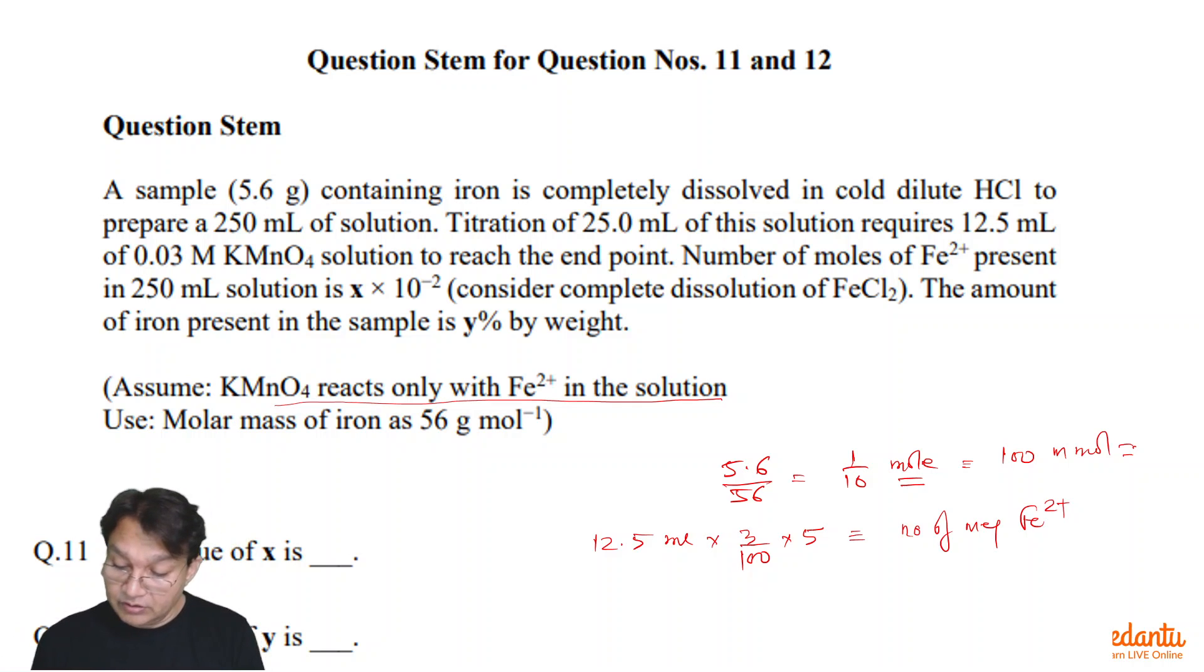We have to find out the number of milliequivalents of Fe2+ in this titration, which is of course 25 ml of this solution, but the total iron was in 250 ml so the total iron must be 10 times of this. So the number of milliequivalents of Fe2+ we can calculate from this simple step.